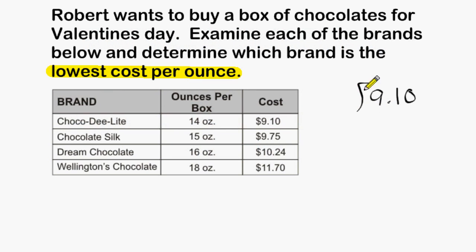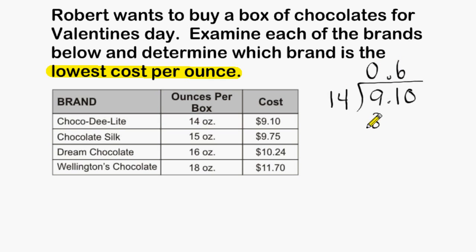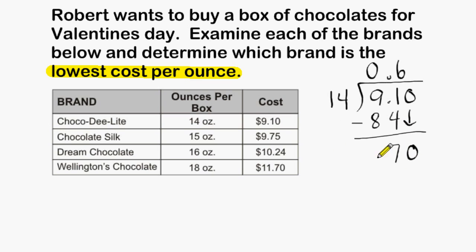For the first brand, we take the price of $9.10 and divide by 14 ounces. 14 divides into 91 six times; 6 times 14 is 84. Subtracting 84 from 91 gives 7, then we bring down the 0, and 14 divides into 70 exactly 5 times. So the unit price for the first brand is 65 cents per ounce.